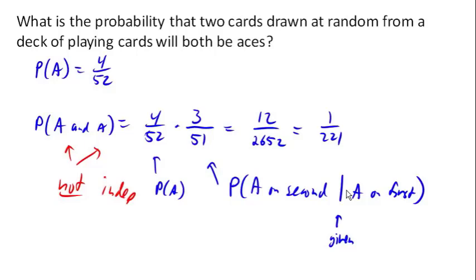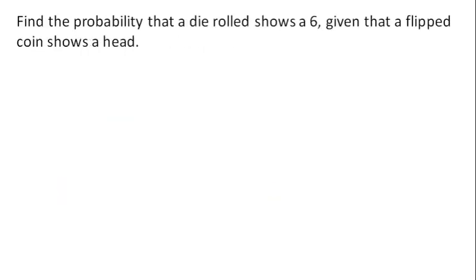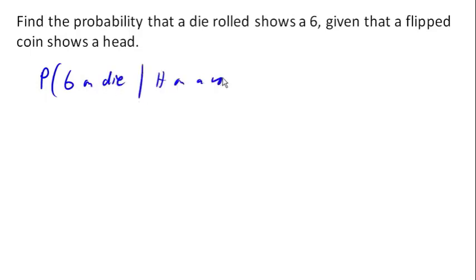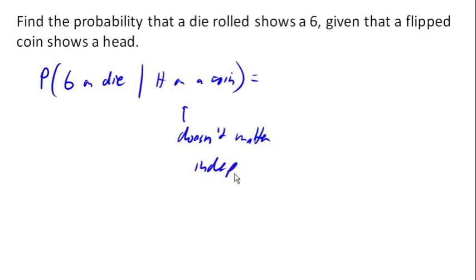This is called a conditional probability. Let's find the probability that a die shows a 6 given that a flipped coin shows a head. This is the probability of a 6 on a die given a head on a coin. In this case, are these two events independent? Yes. So the given condition doesn't matter — the probability of rolling a 6 on a die is the same as always: 1 out of 6.